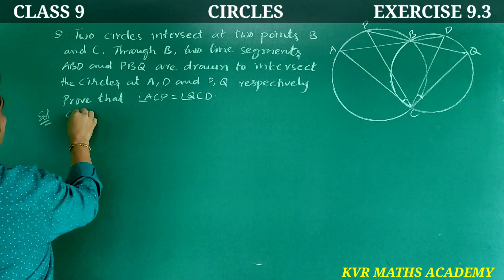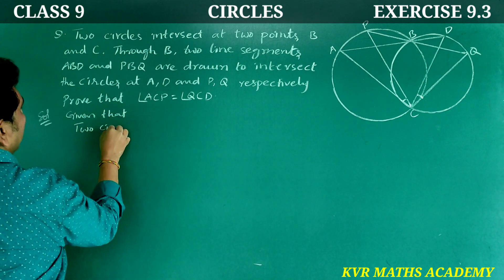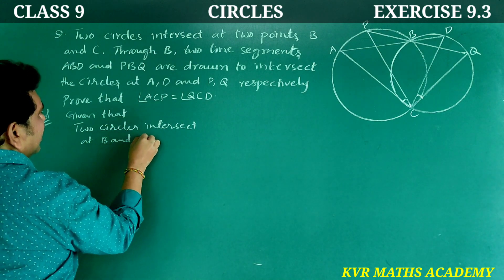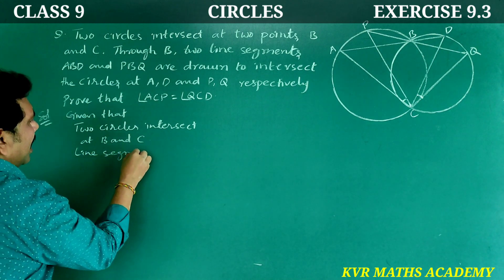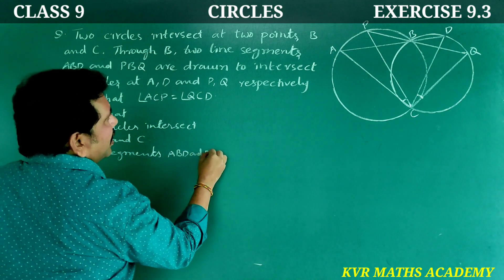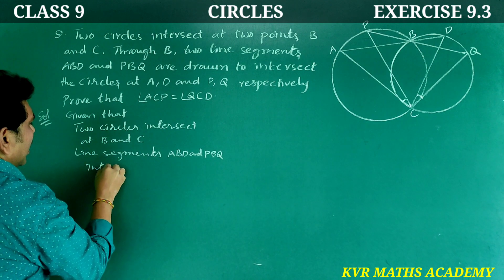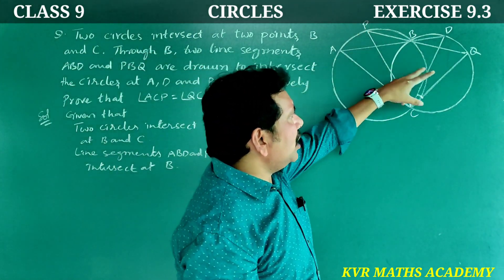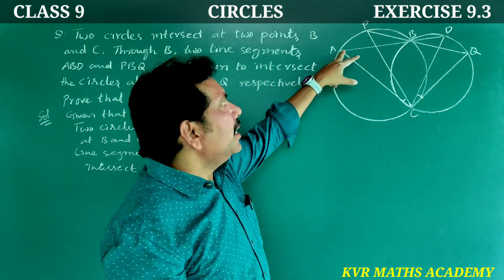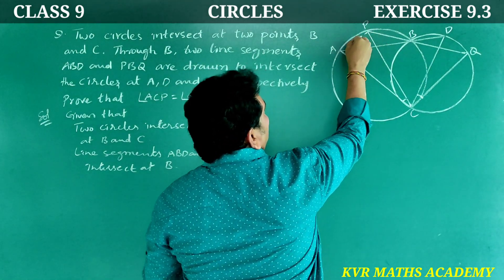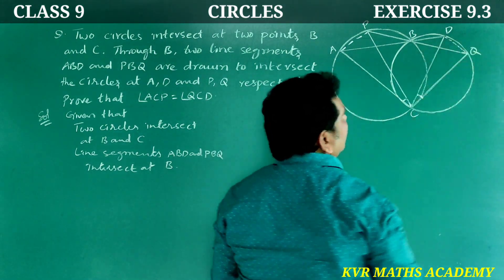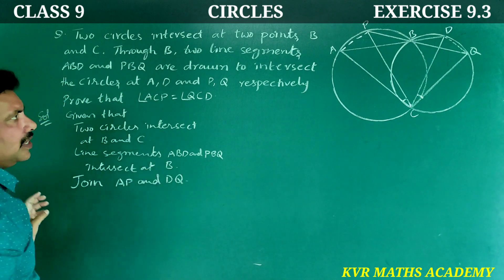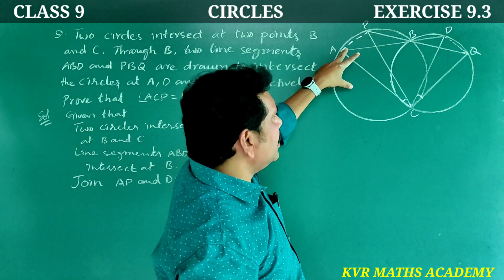Solution. Given: two circles intersect at two points B and C. Line segments ABD and PBQ intersect at B. To prove angle ACP equals angle QCD, we join AP and DQ.